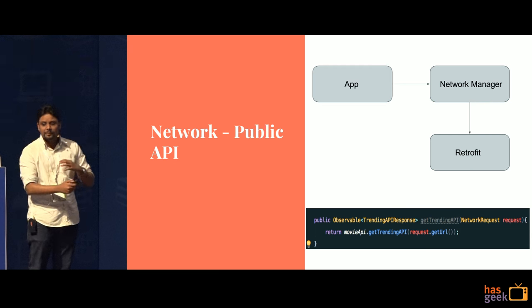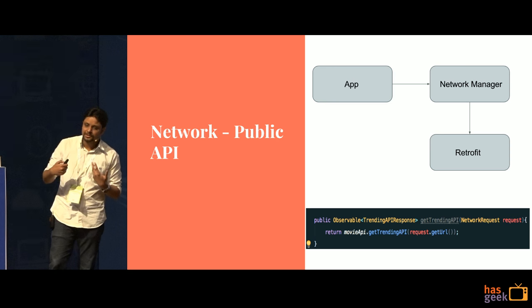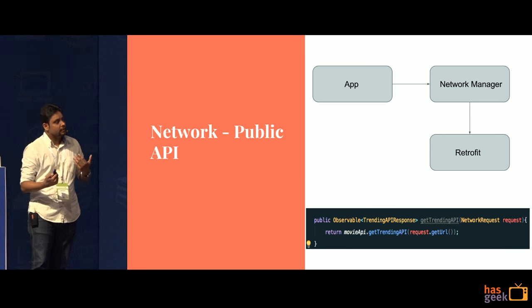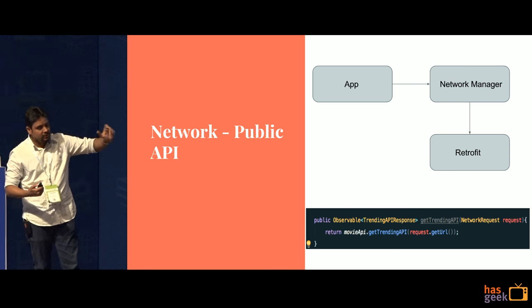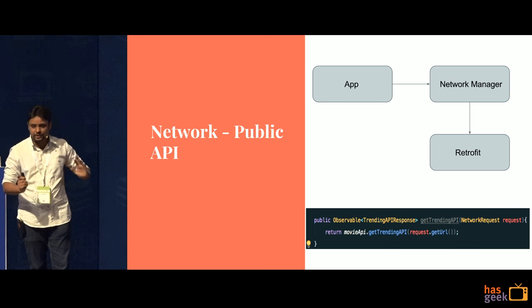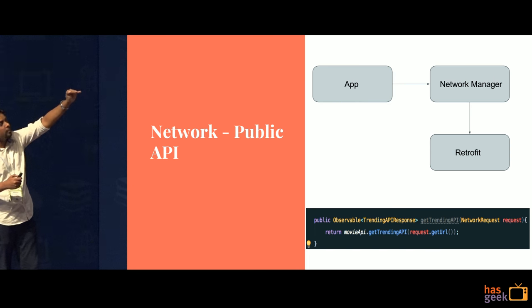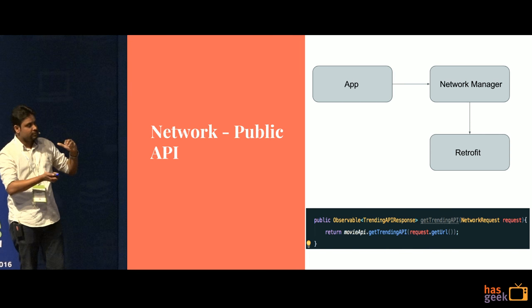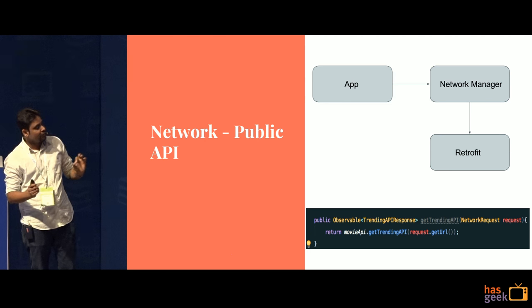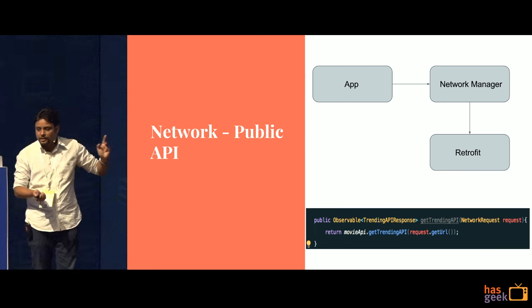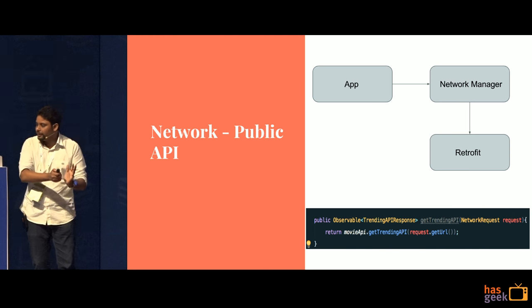Just to give a fair idea — how do I know that moving from Retrofit to Volley doesn't break anything? We follow the standard Java API kind of structure wherein if a method is public and has been exposed in any version, the structure, the parameters, and the return type never change. The app always talks to NetworkManager and never talks to Retrofit directly. NetworkManager talks to Retrofit and gives me the result. I have created this abstract layer — there is a method called getTrendingAPI with no mention of Retrofit within it, and the return type is Observable.